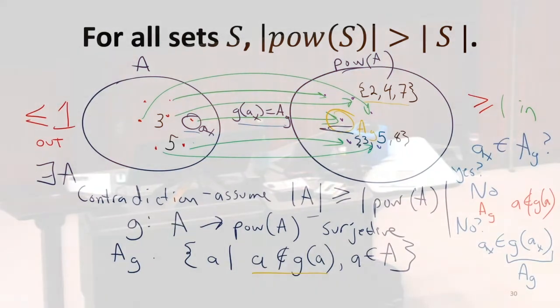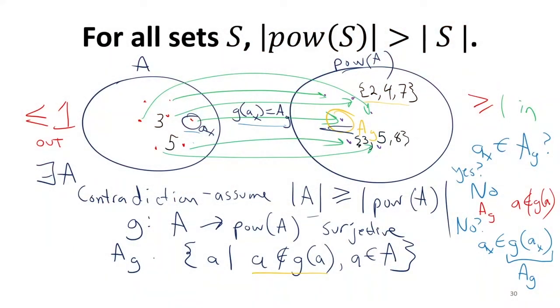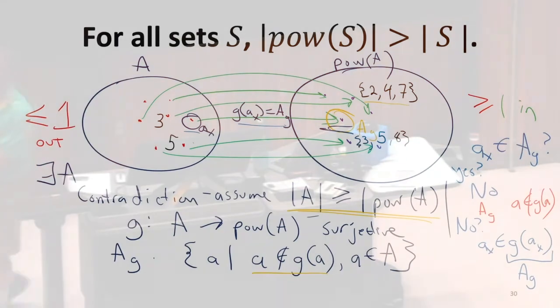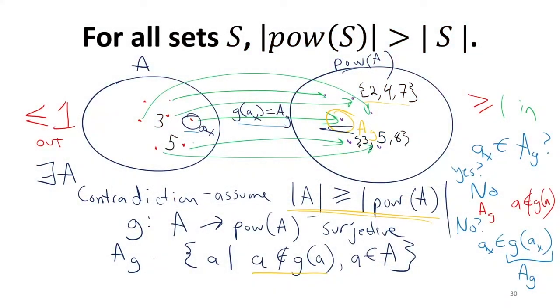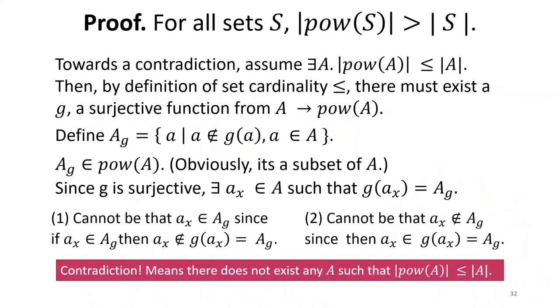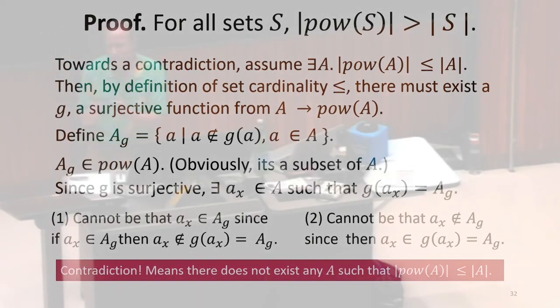We get to a contradiction. And we got to the contradiction by assuming this property, that the cardinality of A was greater than or equal to the power set. So it must be that the power set is bigger. So this was the result that shows there is a set bigger than the first infinite set, even though the way we define an infinite set is one that we add something to it, and it doesn't get bigger. So this is a pretty surprising result.